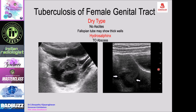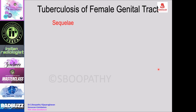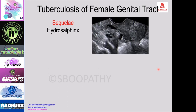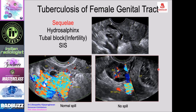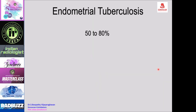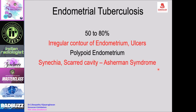With healing and fibrosis, sequelae of fallopian tube tuberculosis include hydrosalpinx or tubal block causing infertility. Saline infusion sonography is used to assess tubal block, showing normal spill on the right side indicating a patent tube, and no spill on the left indicating a blocked tube. Endometrial tuberculosis is seen in 50-80% of cases, showing irregular inner contour due to granulomas and ulcerations, resulting in a polypoid endometrium on ultrasound.